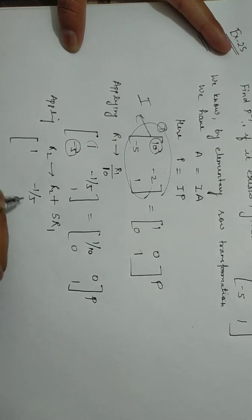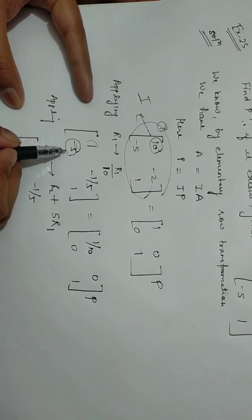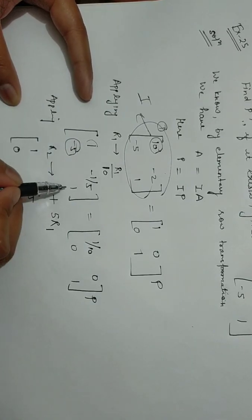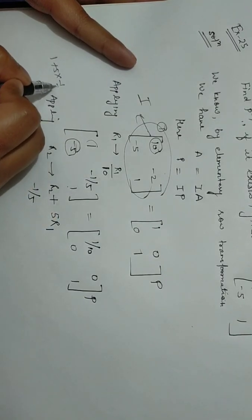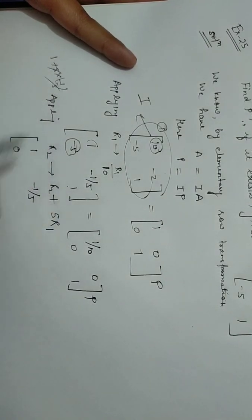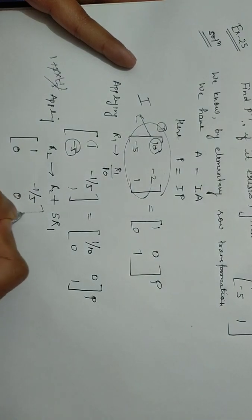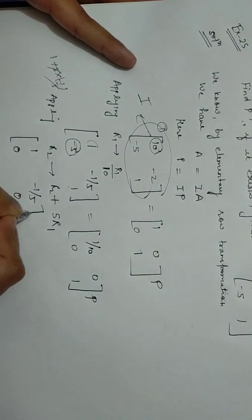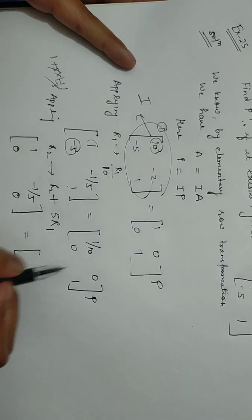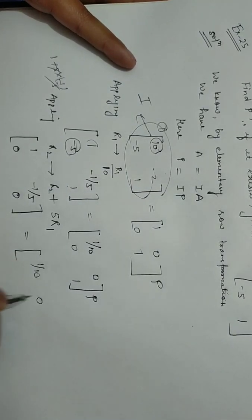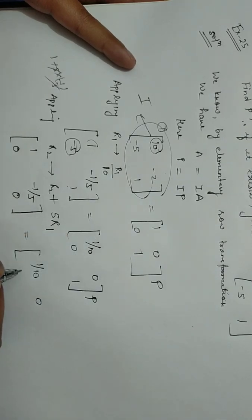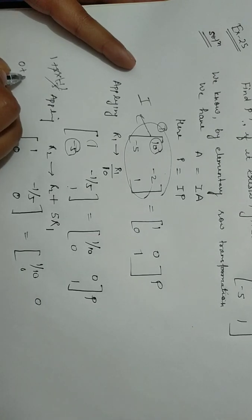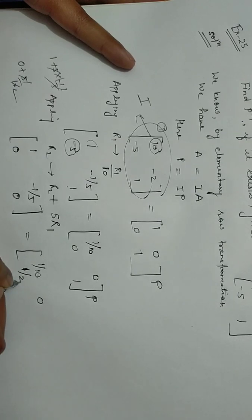So 1, minus 1 by 5 as it is. Minus 5 plus 5 times R1, that means minus 1 by 5. It will be cancelled: 1 minus 1, zero. That is equal to 1 by 10, 0. R2 plus 5R1, that means 0 plus 5 by 10, that will give me here 0 plus 5 by 10, that is 1 by 2. So I can directly write here 1 by 2. So 1 plus 5 times 0, it will be 1 always.